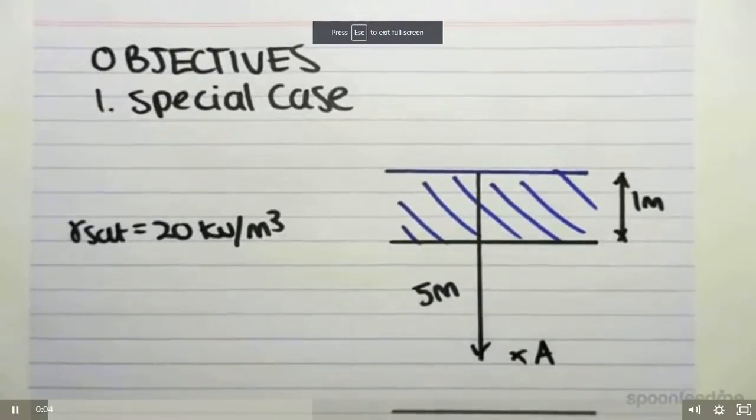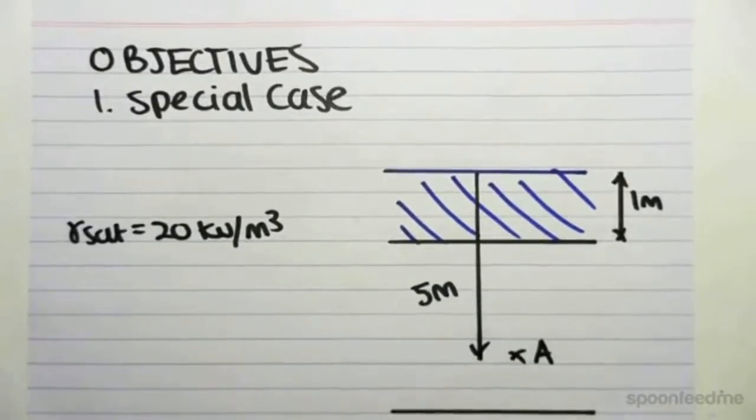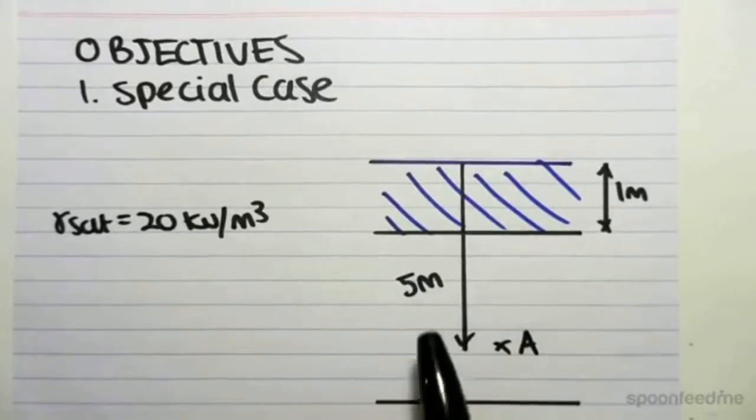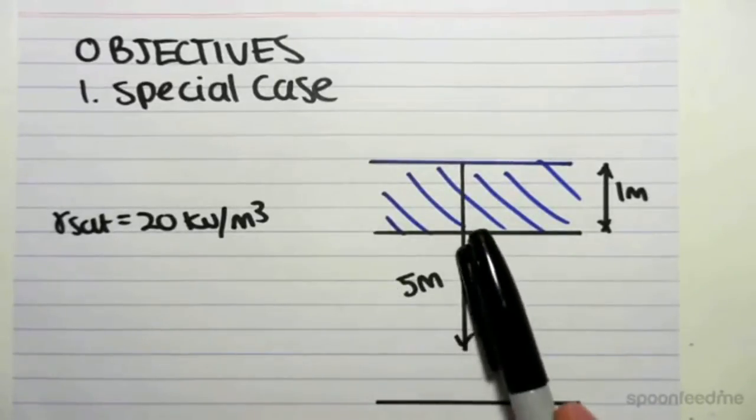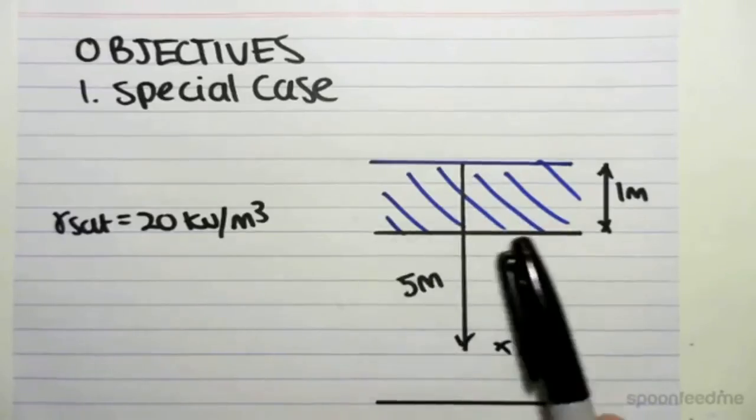In this video, the objective is to look at a special case of effective stress. In this example, the water table is actually above the soil surface.